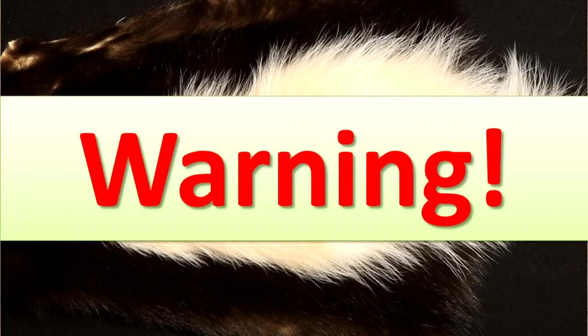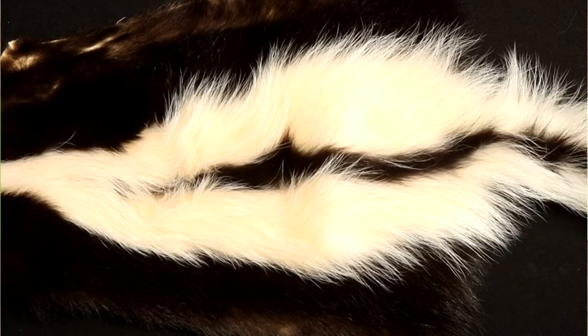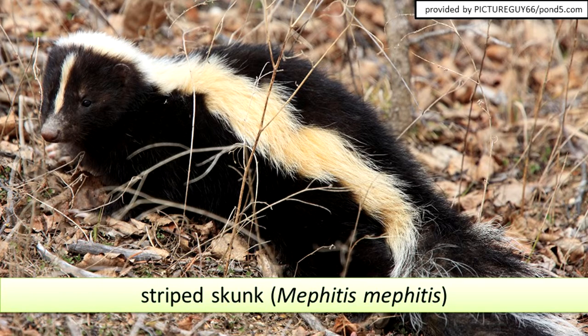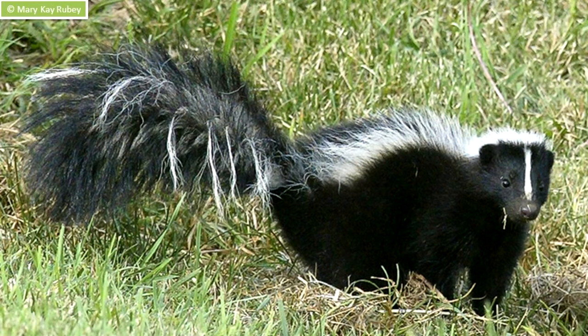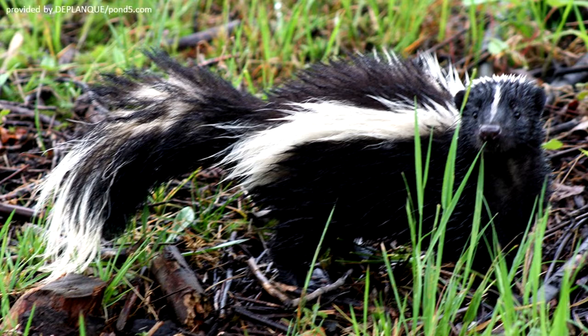The striped skunk has black and white fur. There is no other mammal in Illinois that it could be confused with. The skunk has a pair of anal glands that can spray a bad-smelling musk, which it uses for defense. The spray can cause nausea, burning, and temporary blindness. If an animal has been sprayed by a skunk, it will remember it, and when it sees this color pattern it will stay away from the skunk.